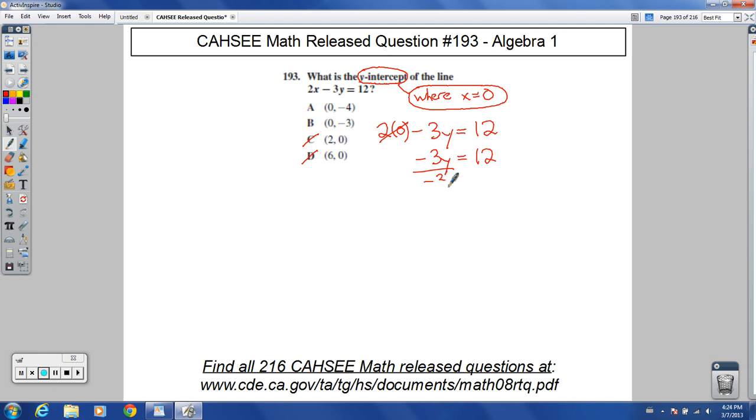And if I divide both sides by negative 3, my answer would be, hopefully readily apparent, y equals negative 4.